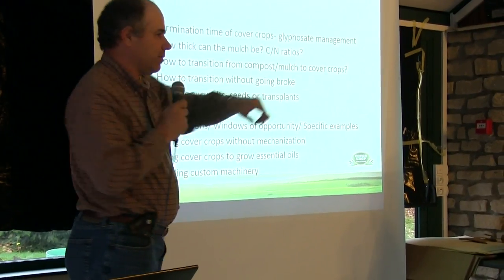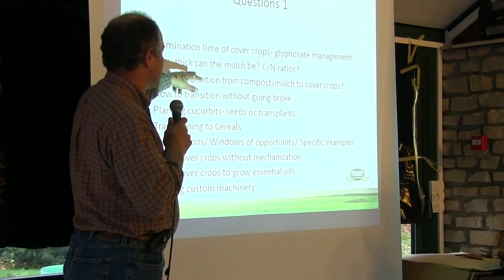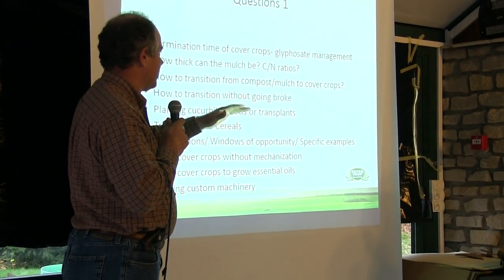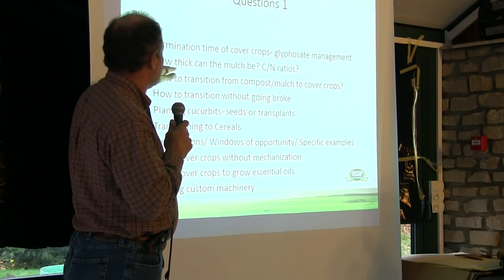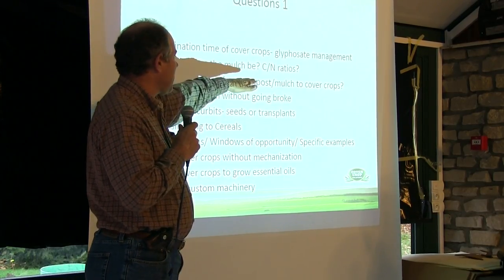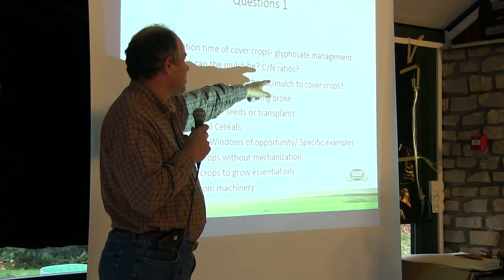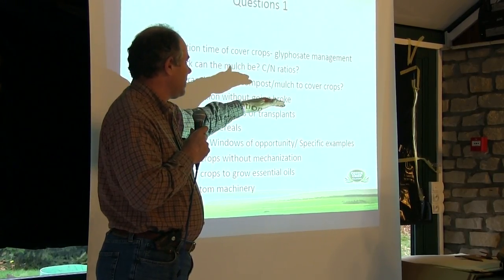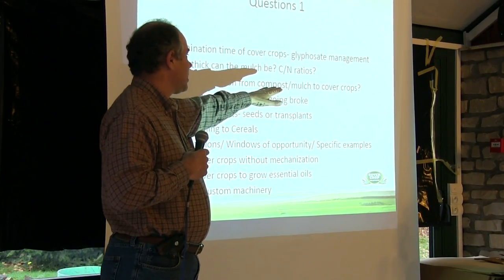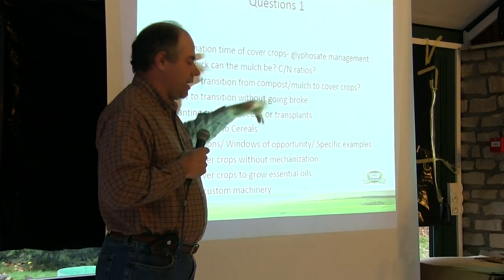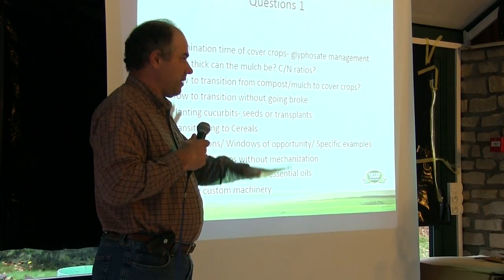There was a question about mulch — putting a thick mulch on and it killed the crop. So the question is: how thick can a mulch be, and what are the carbon-to-nitrogen ratios of a mulch, whether living or applied as straw? Carbon to nitrogen ratio in things like legumes tends to be very low.